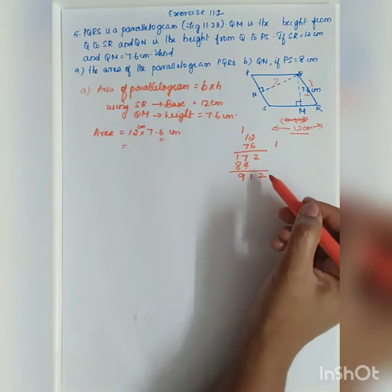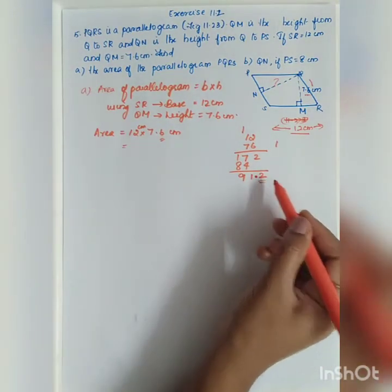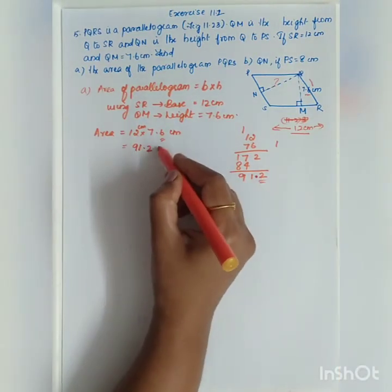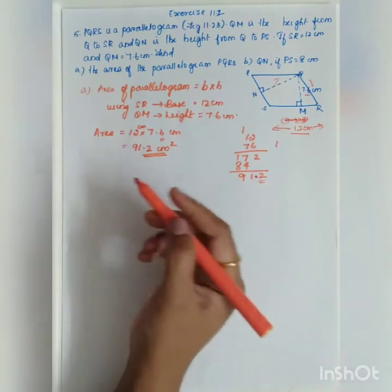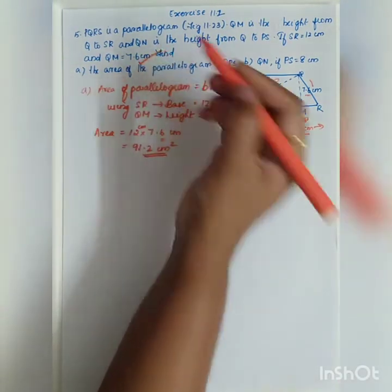After decimal, how many points are there? One. So you have to put, from the right, you leave one digit and give the number. So it is 91.2 cm into cm, you will be getting cm squared. So area is equal to 91.2 cm squared. First option is done.